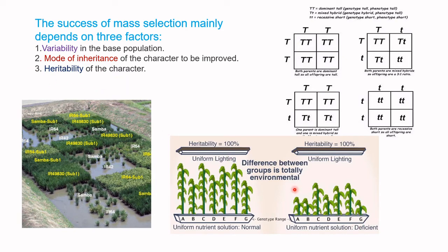Third, the heritability of the character — meaning the amount of genetic variance out of total phenotypic variance, where phenotypic variance equals genetic variance plus environmental variance. For instance, if one tree is grown under nutrient-deficient conditions and another under sufficient nutrients, and the genetic variance is high, superior genotypes will perform better than inferior ones in both conditions. Therefore heritability of the character is a key factor for successful mass selection.